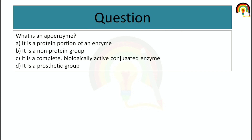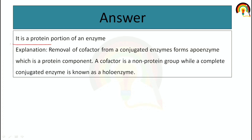Then, what is apoenzyme? The options are: it is a protein portion of an enzyme; second is it is a non-protein group; third is it is a complete biologically active conjugated enzyme; and fourth is it is a prosthetic group. The correct answer is it is a protein portion of an enzyme.